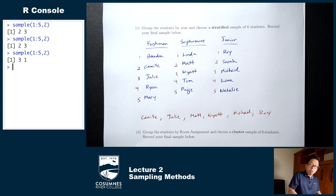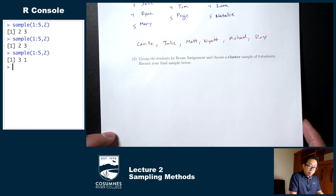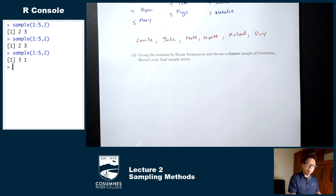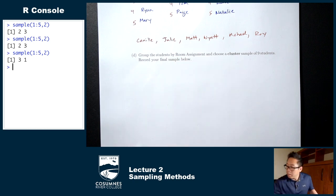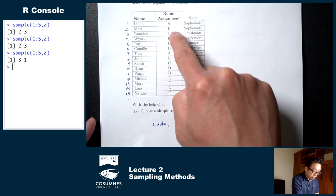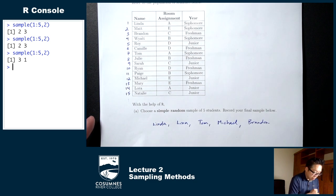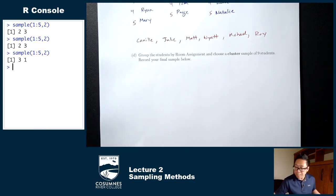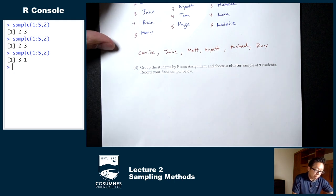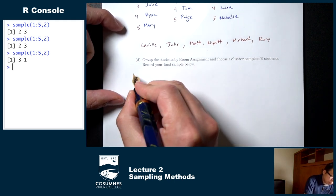Now let's try a cluster sample. The example says group the students by room assignment and choose a cluster sample of nine students. So now I'm breaking up the population using room assignments. Looking at the room assignments, we have rooms A through E. Instead of breaking up students by year, I'll break them up now by room.